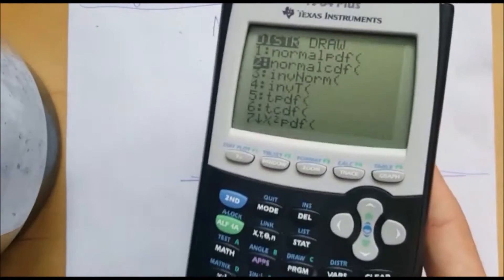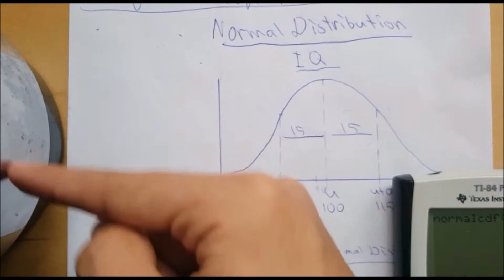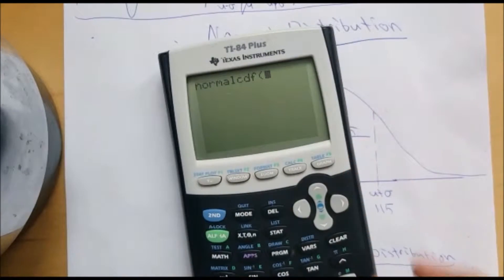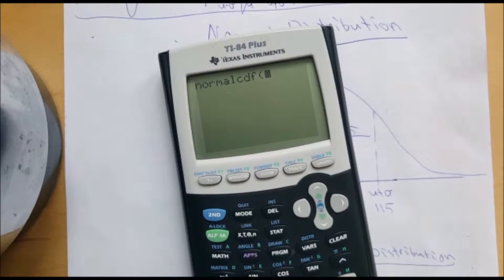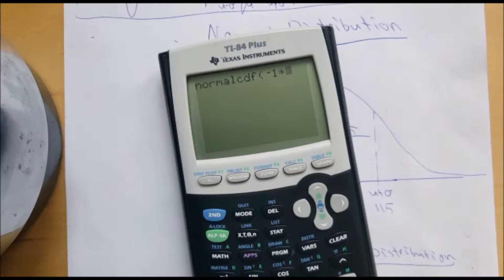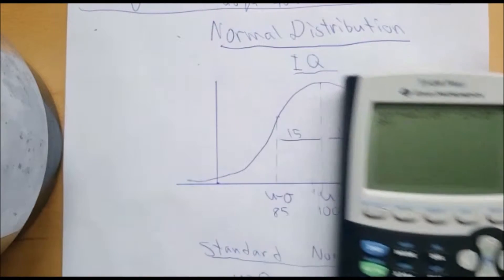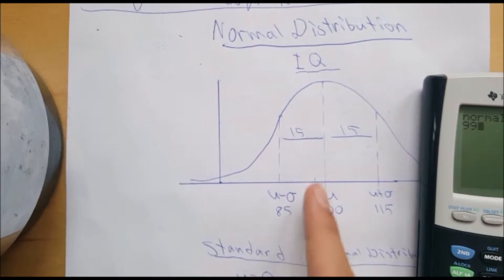Then you go to normal CDF and then you plug in the lower boundary. Since it goes all the way to infinity, we have to just use a really small value, so I like to use negative 1 times 10 to the 99.